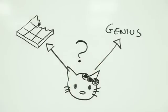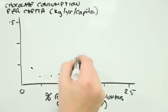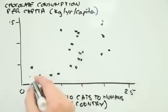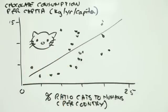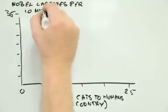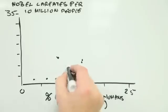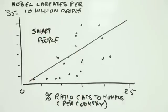Amazingly, the cat-chocolate-Nobel thing works. Not only do the number of cats per capita in a country correlate with the amount of chocolate each person eats, but they also correlate with the number of Nobel Prizes per head of population.